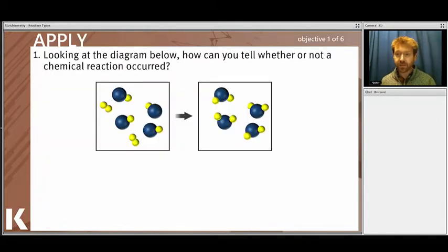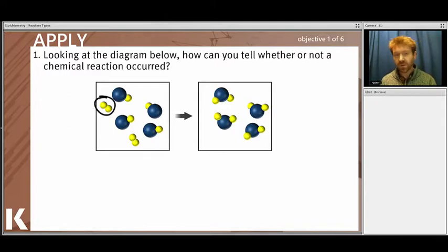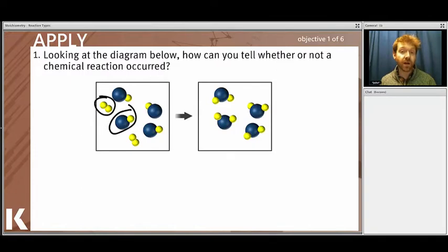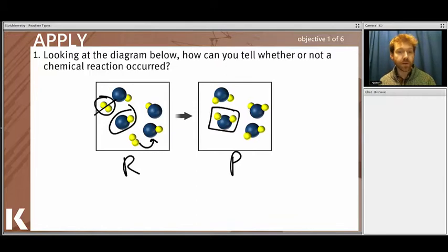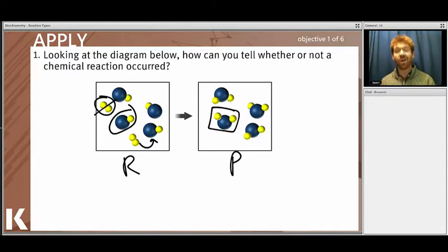Let's go through an example — we want to tell whether or not a chemical reaction has occurred. Looking at the diagram, we've got two yellow dots (hydrogens) and an oxygen bound to hydrogen. Notice the types of bonds have changed in the products on the right-hand side. We severed the bond between the hydrogens and formed a new bond between one hydrogen and the oxygen, forming water. Since we have new bonds that didn't exist before and lost bonds that previously existed, a chemical reaction has occurred.